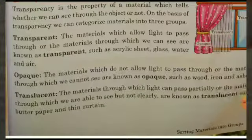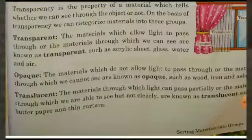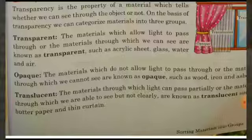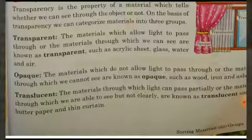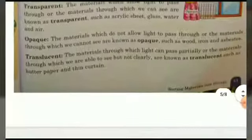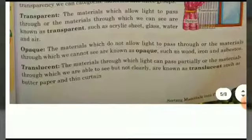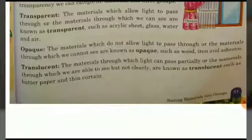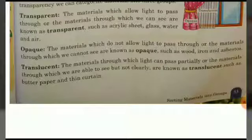The first group is transparent objects. Materials which allow light to pass through them, and through which we can see clearly, are known as transparent materials. Examples include acrylic sheet, glass, water, and air. The second group is opaque objects — materials which do not allow light to pass through, and through which we cannot see.